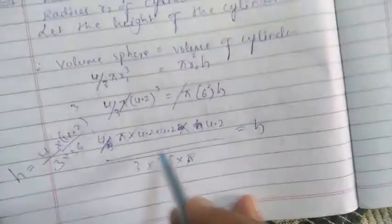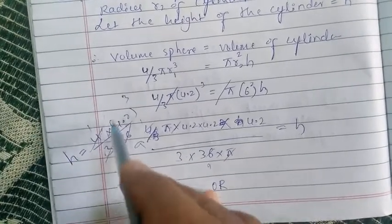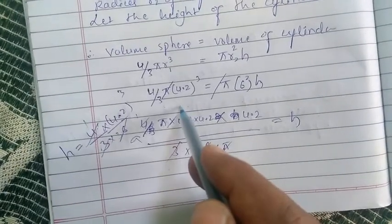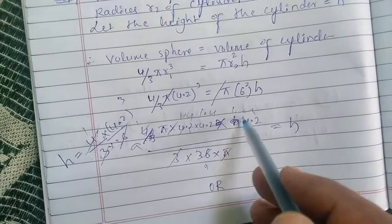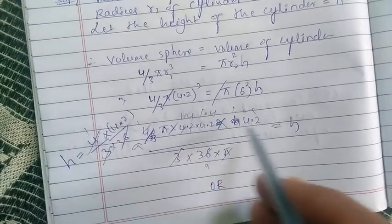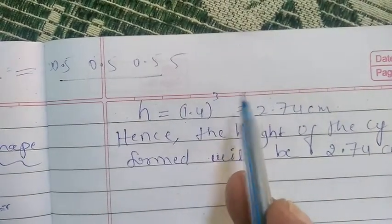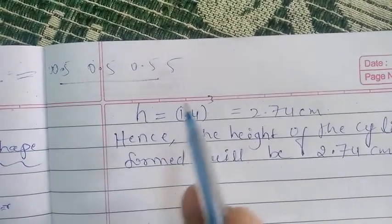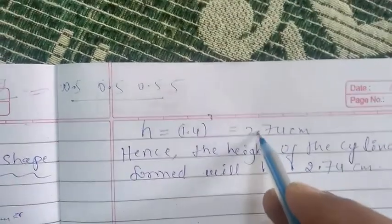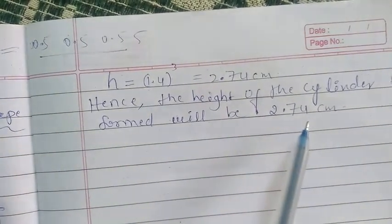After cancelling, h = 1.4 × 1.4 × 1.4, which is 1.4 raised to the power 3. Multiplying: 1.4 × 1.4 = 1.96, then × 1.4 gives h = 2.74 centimeters. Hence the height of the cylinder formed is 2.74 centimeters.